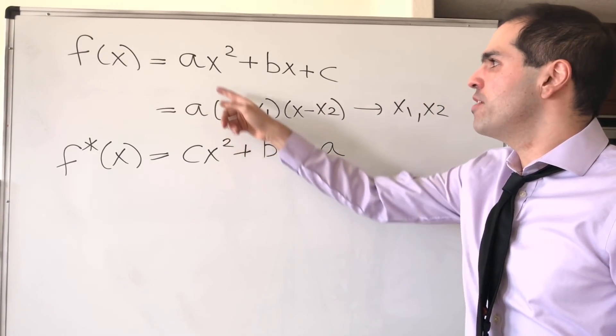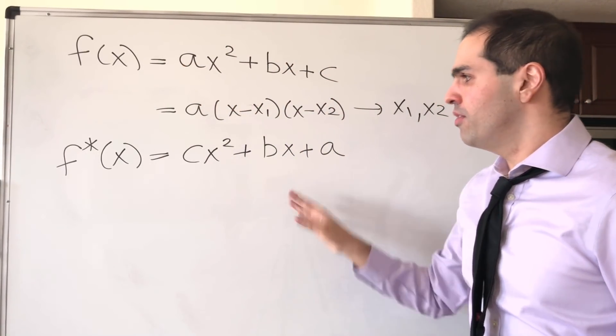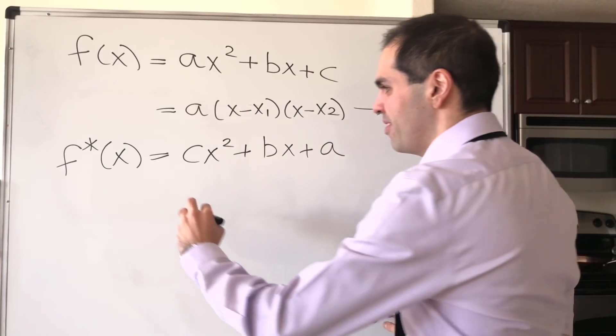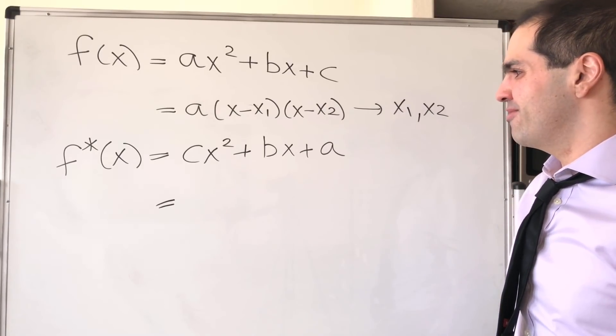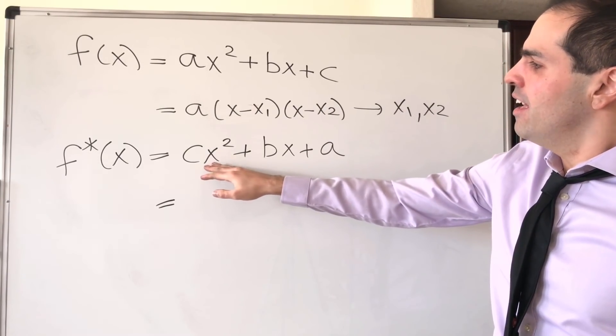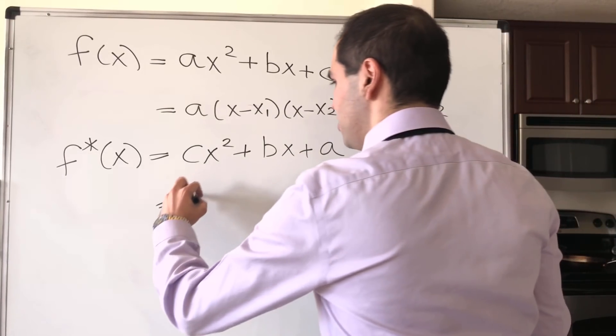And at this point, I should mention, it's actually very important that both a and c are non-zero. Otherwise, this magic wouldn't quite work. And otherwise, you couldn't really take reciprocal of zero. That wouldn't make much sense.